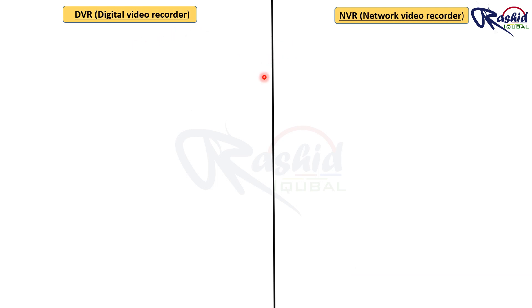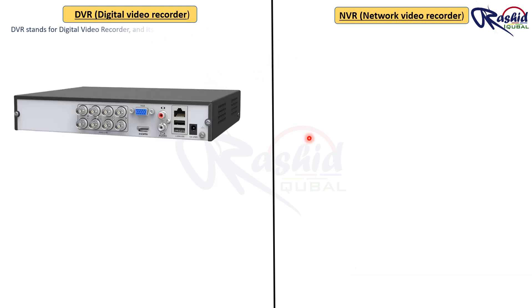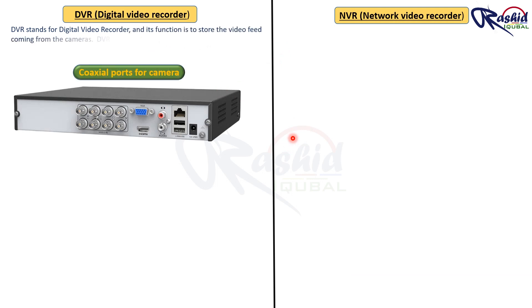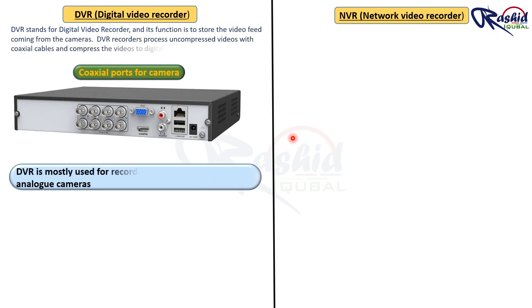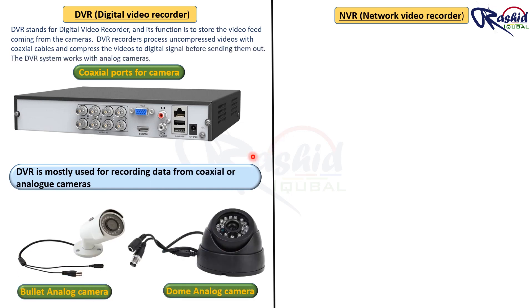DVR stands for Digital Video Recorder, and its function is to store the video feed coming from the cameras. DVR recorders process uncompressed videos with coaxial cables and compress the videos to digital signal before sending them out.